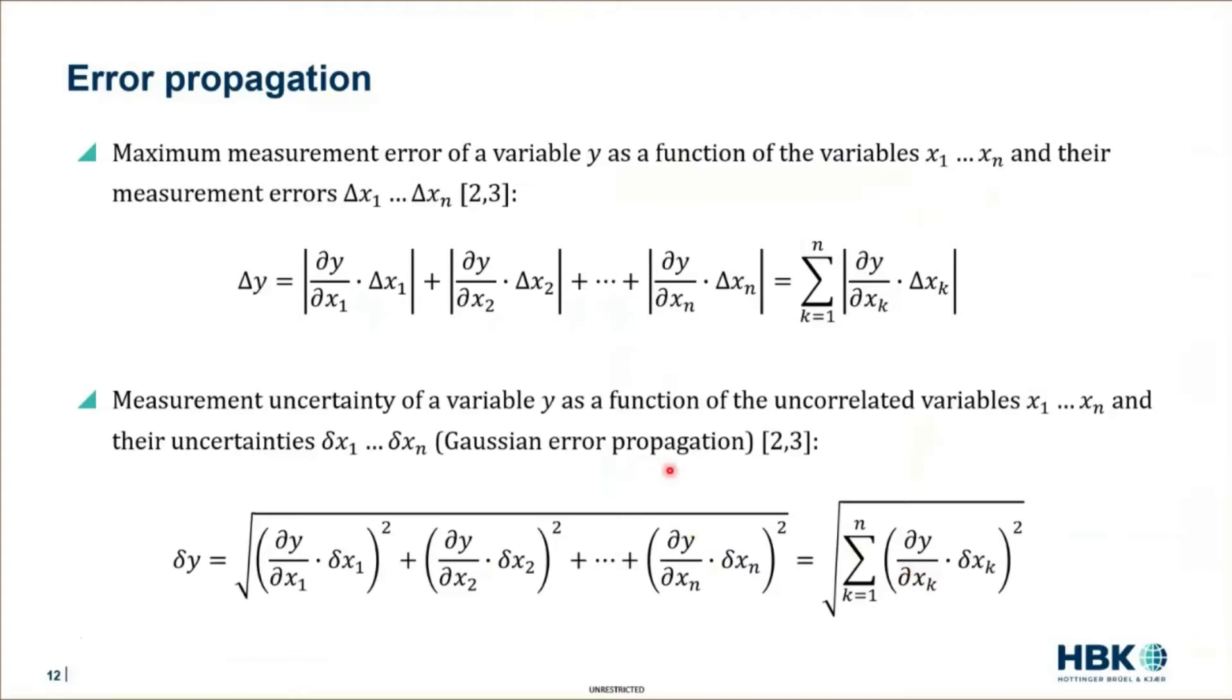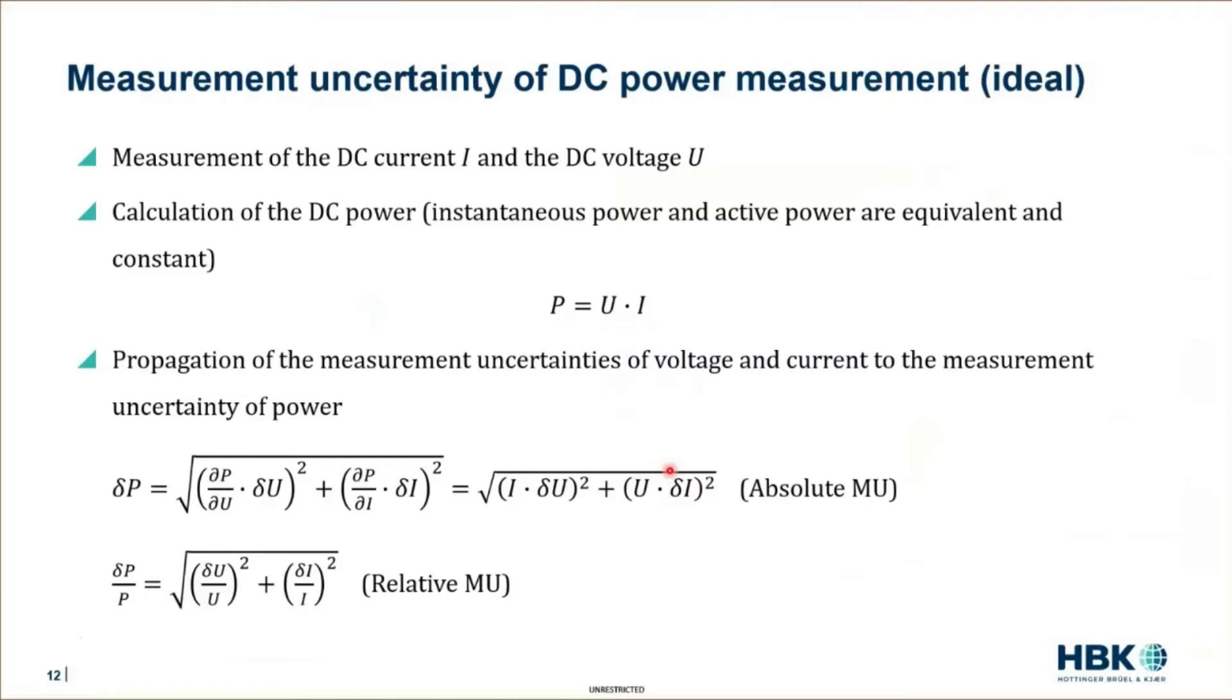We can now use these formulas to apply that on the active power. In this easy example, the DC active power, which is well known as the product of the DC voltage and the DC current. If you apply the Gaussian error propagation, then you will see that the relative measurement uncertainty of active power is equal to the squared sum of the relative measurement uncertainty of the voltage and the relative measurement uncertainty of the current.